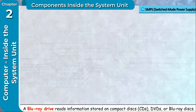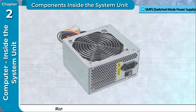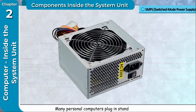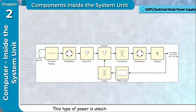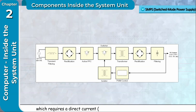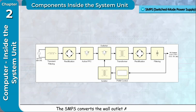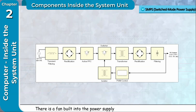SMPS (Switched Mode Power Supply): Many personal computers plug into standard wall outlets which supply an alternating current (AC) of 115 to 120 volts. This type of power is unsuitable for a computer, which requires a direct current (DC) ranging from 5 to more than 15 volts. The SMPS converts the wall outlet AC power into DC. There is a fan built into the power supply that keeps it cool.